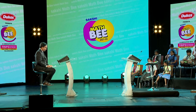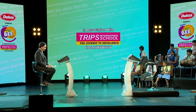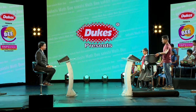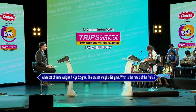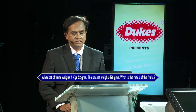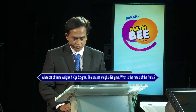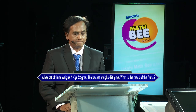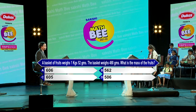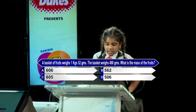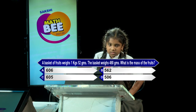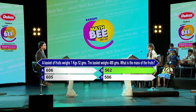Next I call upon Chaitanya Sudiksha from Trips International School Rajmandri. Question please: A basket of fruits weighs 1 kg 52 grams; the basket weighs 490 grams. What is the mass of the fruits? Options: A) 606, B) 562, C) 605, D) 506. Option B — kindly lock option B 562. Very good, 562 is the correct answer. Well done.